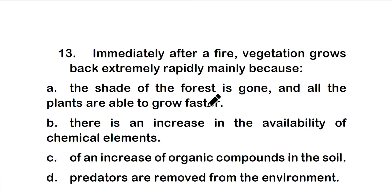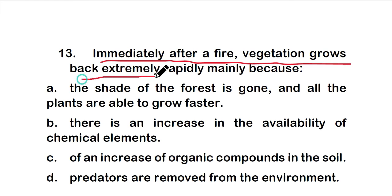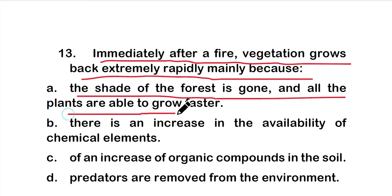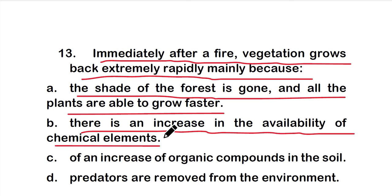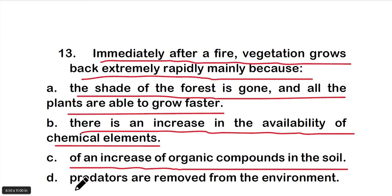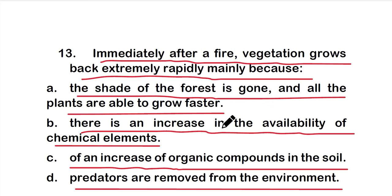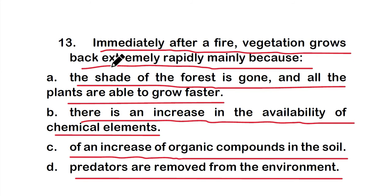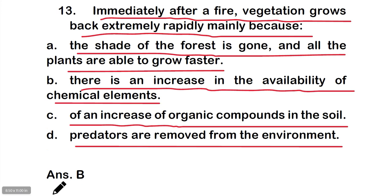Question number thirteen: Immediately after a fire, vegetation grows back extremely rapidly mainly because — option A: shade of the forest is gone; option B: there is an increase in availability of chemical elements; option C: increase of organic compounds in the soil; or option D: predators are removed from the environment. The right answer is option B — there is an increase in availability of chemical elements.